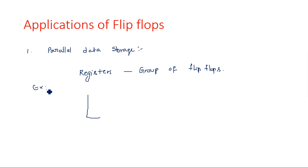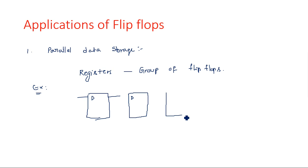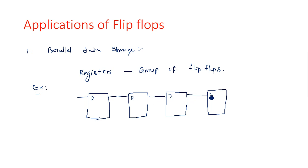Let me take an example. I am taking a D flip-flop. The output of this flip-flop I am giving to another D flip-flop, and again one more D flip-flop, and again one more D flip-flop. So how many flip-flops have you used here? Four flip-flops. That means this particular register consists of four bits of information — it is used to store four bits of information.